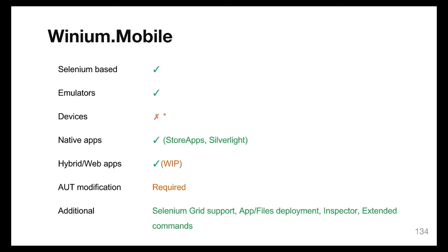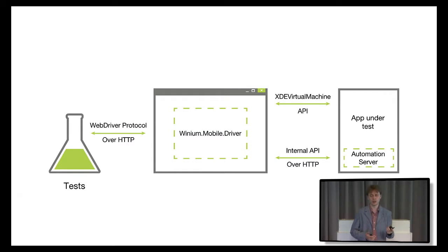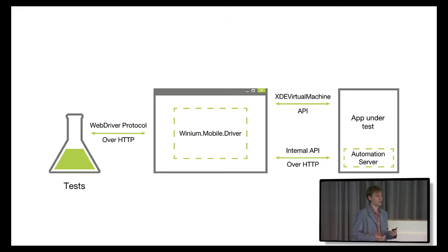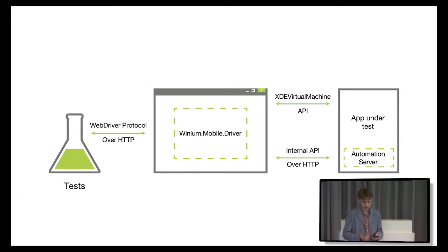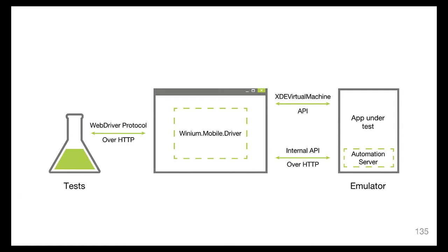We're also working on support for hybrid application testing. Because it's Selenium-based, you can easily plug it into your existing infrastructure — you can use it with Selenium Grid to run tests in parallel. There is one caveat though: because of heavy sandboxing on Windows Phone, you have to embed a special automation server right inside your application. This server handles commands like finding elements, getting text values, and so on.